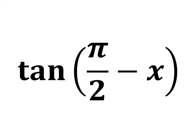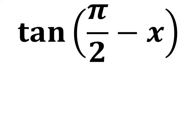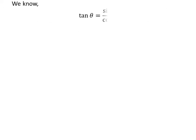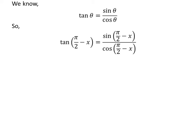In this video, we will learn to find the value of tangent of half of pi minus x. We know tangent of theta is equal to sine of theta upon cosine of theta. So application of the above identity gives us tangent of half of pi minus x is equal to sine of half of pi minus x upon cosine of half of pi minus x.